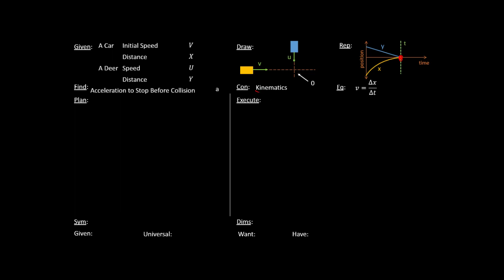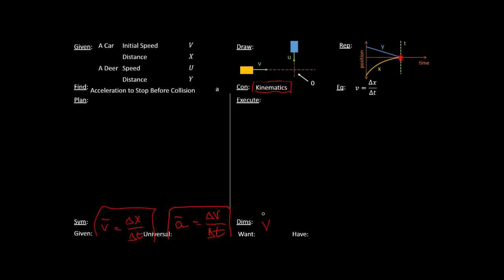This is a kinematics problem, and for kinematics we have three different things we're allowed to use. The first one is V-bar equals delta-X over delta-T — the change in position over change in time, basically the definition of average velocity. The average acceleration is the change in velocity over the change in time. And then for uniform acceleration, the average velocity is equal to V1 plus V2 — the initial and final velocities — divided by 2.